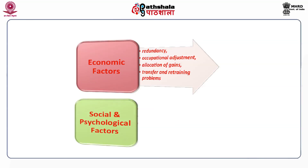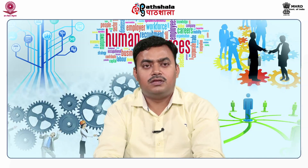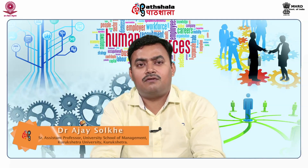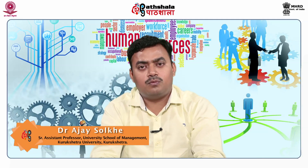With respect to social and psychological factors, resistance to change, job satisfaction, and worker and union relations are the prominent concerns. Technology may be influential in several characteristic ways: it influences the length of the job cycle, the size of the work group, the nature of relationships, the frequency with which jobs are changed, the degree and nature of skills employed, the physical environment, physical effort in work, and the occupational structure.